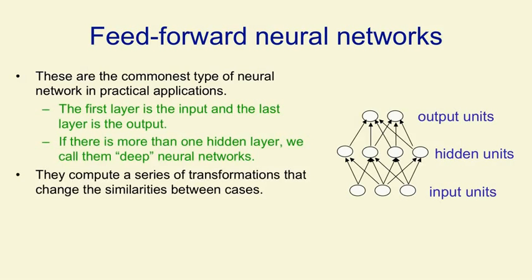These networks compute a series of transformations between their input and their output. So at each layer, you get a new representation of the input, in which things that were similar in the previous layer may have become less similar, or things that were dissimilar in the previous layer may have become more similar.